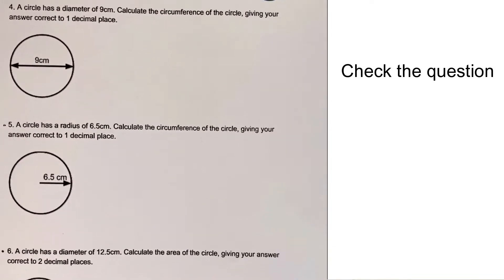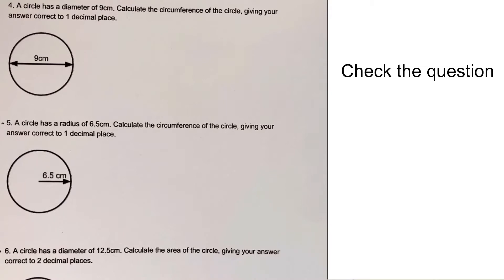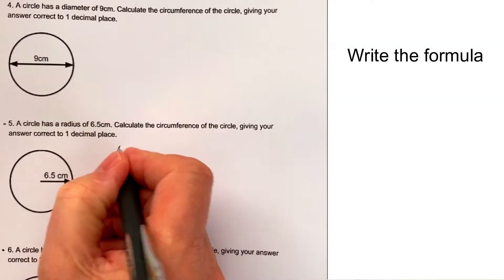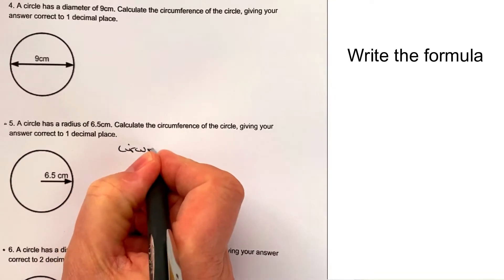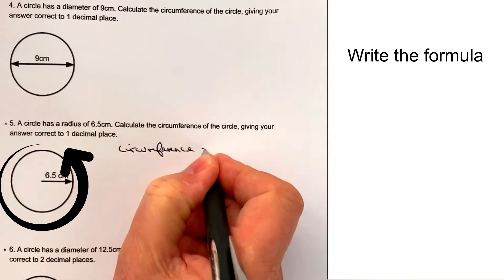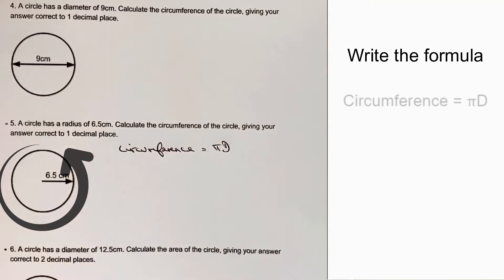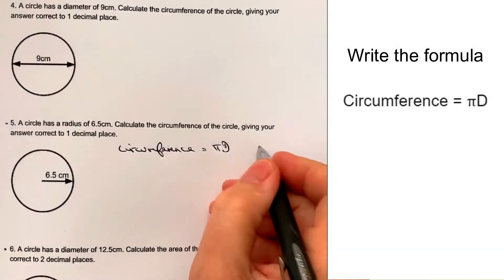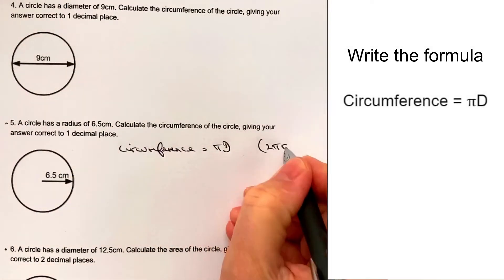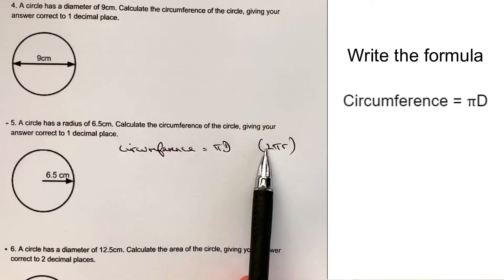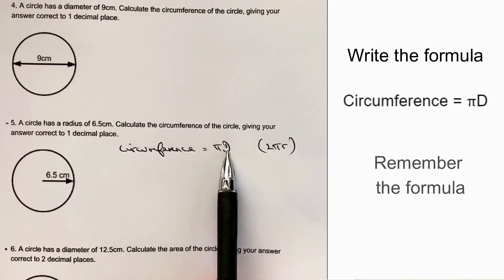In this particular worksheet, it's always a good idea to write down the formula that you need. So the circumference is going to be equal to pi d. Sometimes I see some people will write 2 pi r. That's exactly the same because two times the radius is actually the diameter.